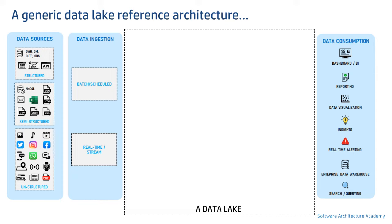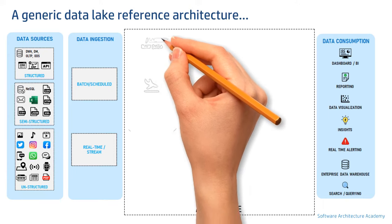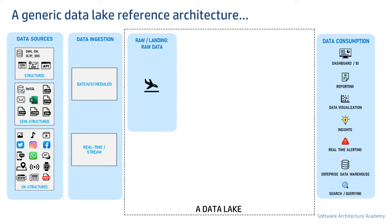In a typical data lake there can be three storage layers and one horizontal layer. The first layer is known as the raw or landing zone. It's a staging area used for quick and efficient ingestion. The philosophy here is to ingest everything in vicinity, irrespective of use cases or whether the data is going to be used in the future or not.